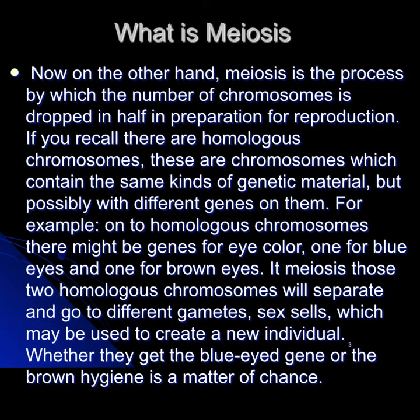On the other hand, meiosis is the process by which the number of chromosomes is dropped in half in preparation for reproduction. There are homologous chromosomes, which are chromosomes that contain the same genetic material but possibly different genes on them.